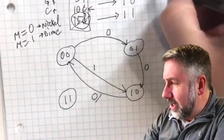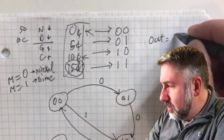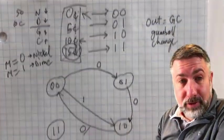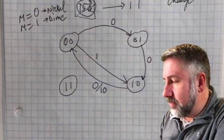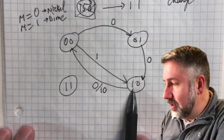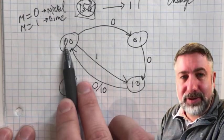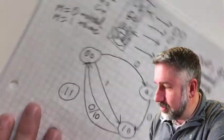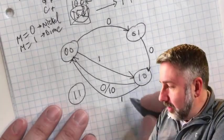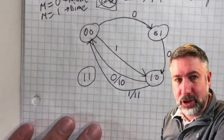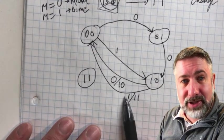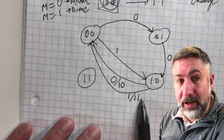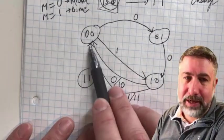Let's label our outputs G (gumball) and C (change) on the state diagram. If I'm in state 10 cents and receive a nickel, I output gumball=1, change=0 and go back to state zero. If I'm in state 10 cents and receive a dime, I go back to state zero dispensing a gumball and change, because the user has input 20 cents total.